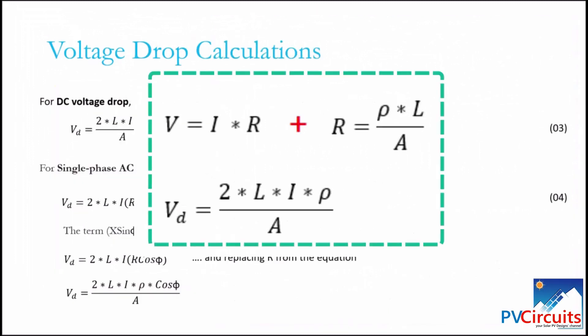For DC voltage drop, the voltage and resistance equations can be combined such that we end up with equation 03.